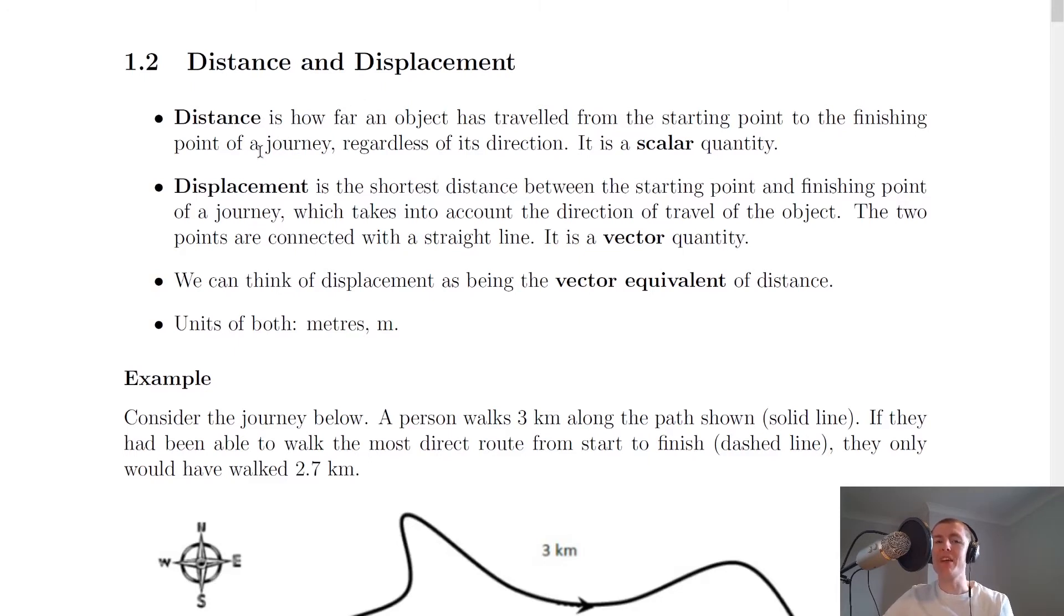So distance is defined as how far an object has traveled from the starting point to the finishing point of a journey, regardless of its direction. It is a scalar quantity. So remember from our table of scalars and vectors, distance is a scalar quantity, so we don't care about a direction.